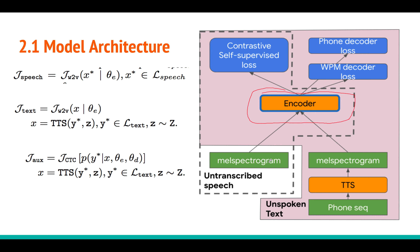In Wave2Vec 2.0 they used raw audio, so they needed a feature encoder to extract high-level information like MFCC or spectral features. Here they use mel spectrogram directly, so they only need two or three CNN layers to encode features into a high-level representation that goes into the context network. The context network does all the heavy lifting, learning contextual representations such as how phonemes, syllables, and word pieces are related.